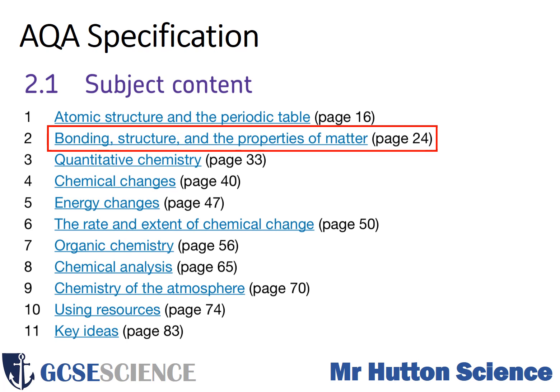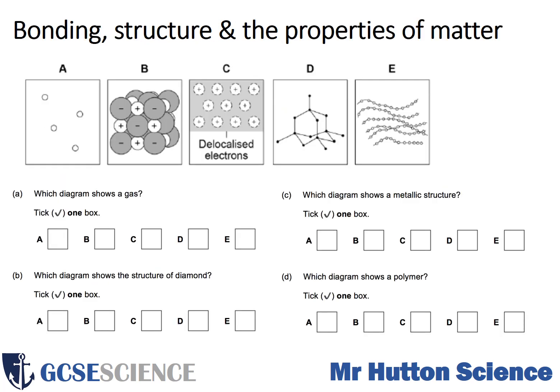Right, let's get started. The first question is a low demand question. There are five different pictures of different types of molecules and bonding, and you've got various questions below related to these diagrams. You have to tick one box — one is in bold so you must only tick one box in relation to those questions. The first thing I'd always consider is looking at these diagrams and having a rough idea of what's going on in each one.